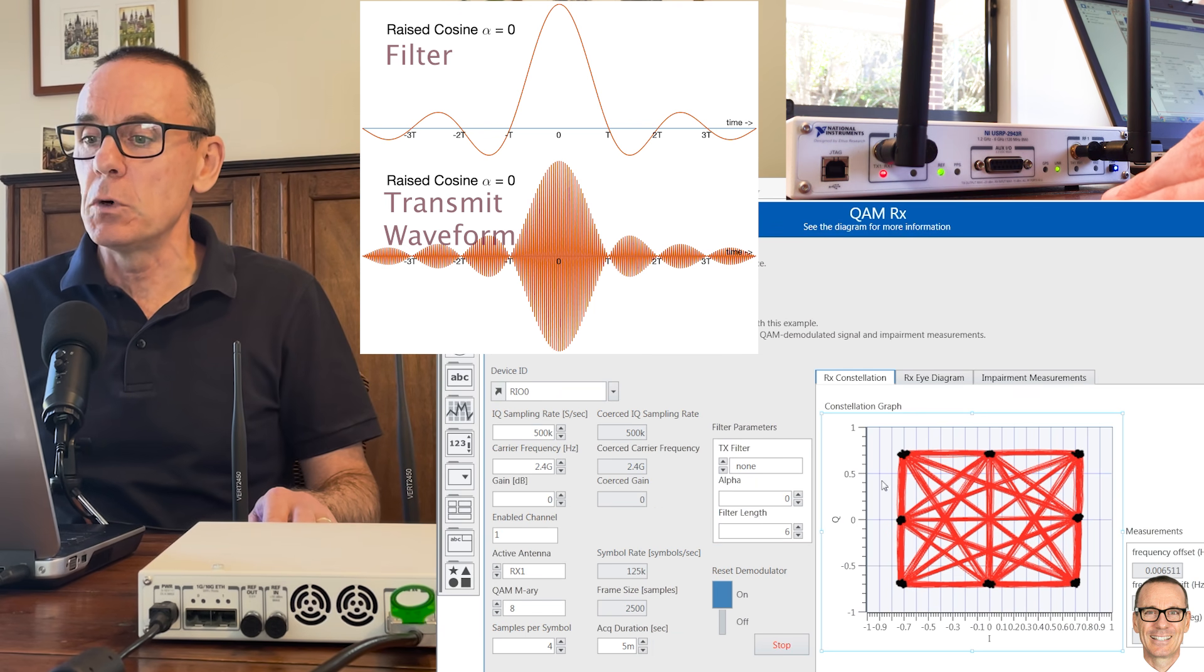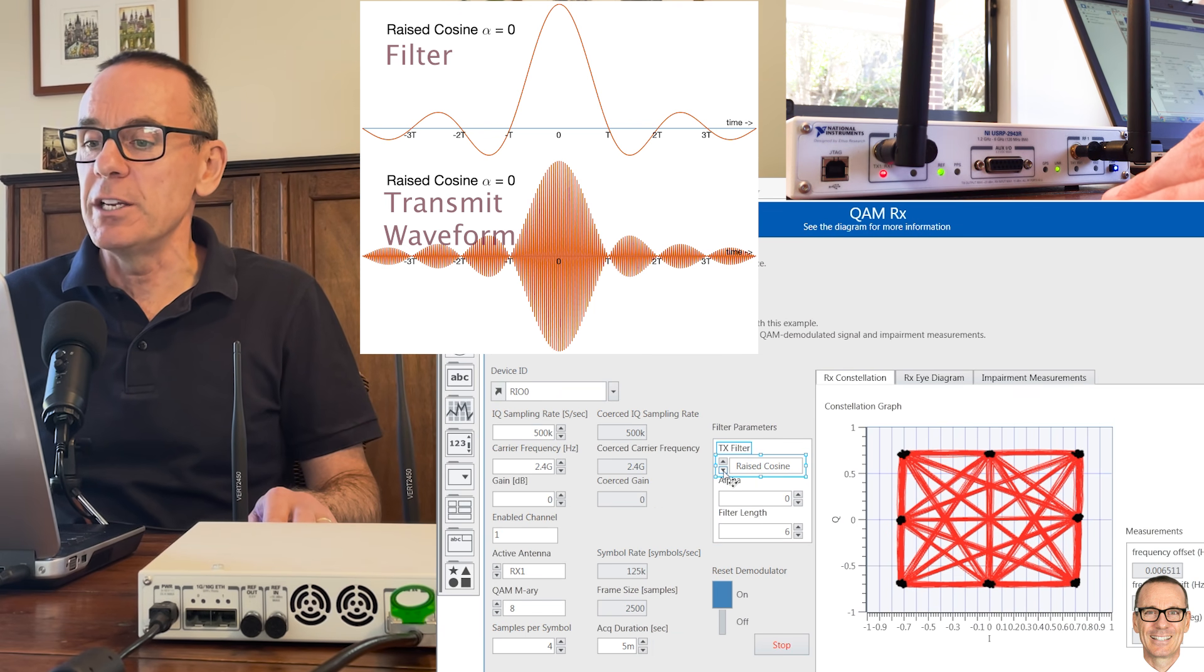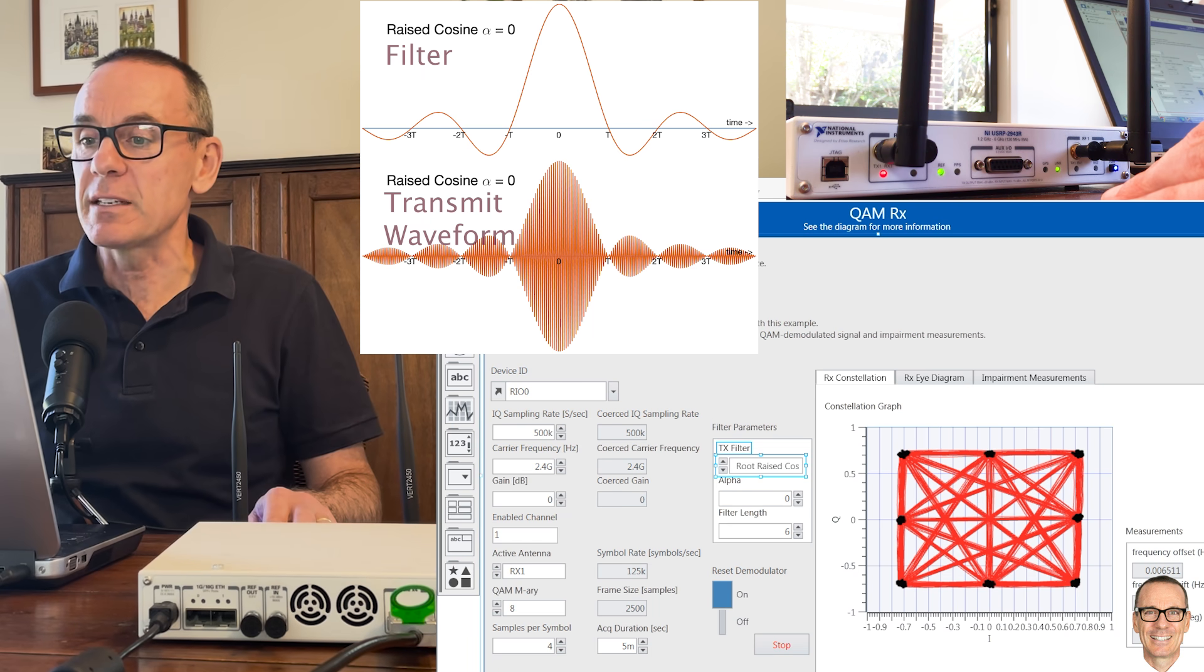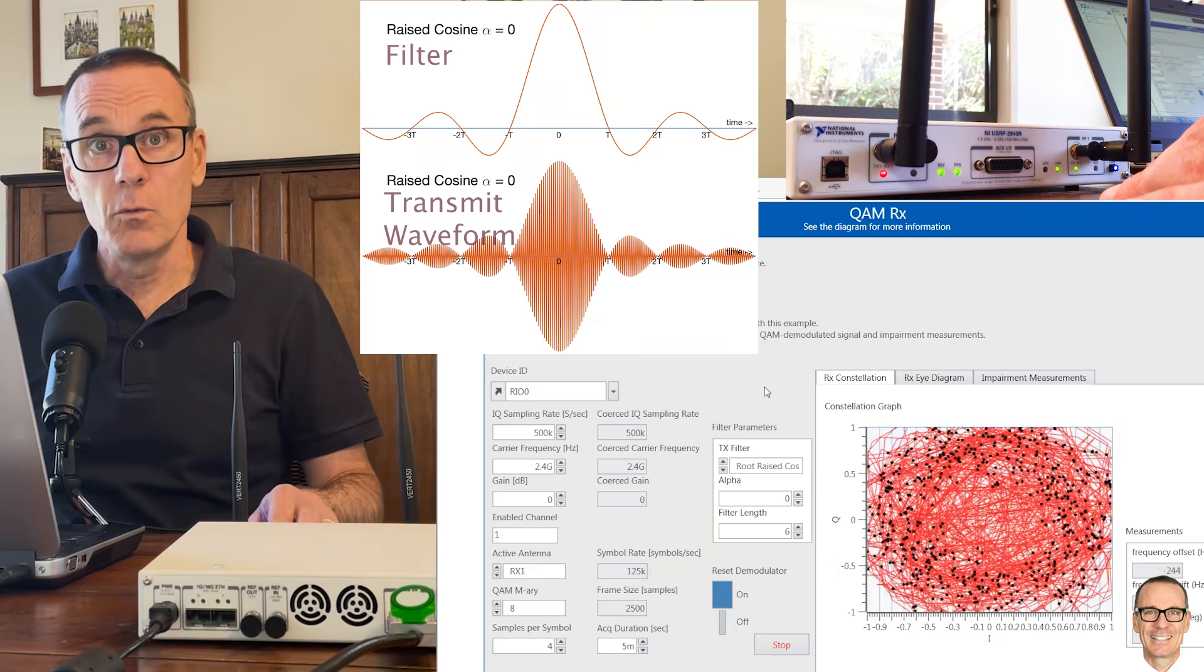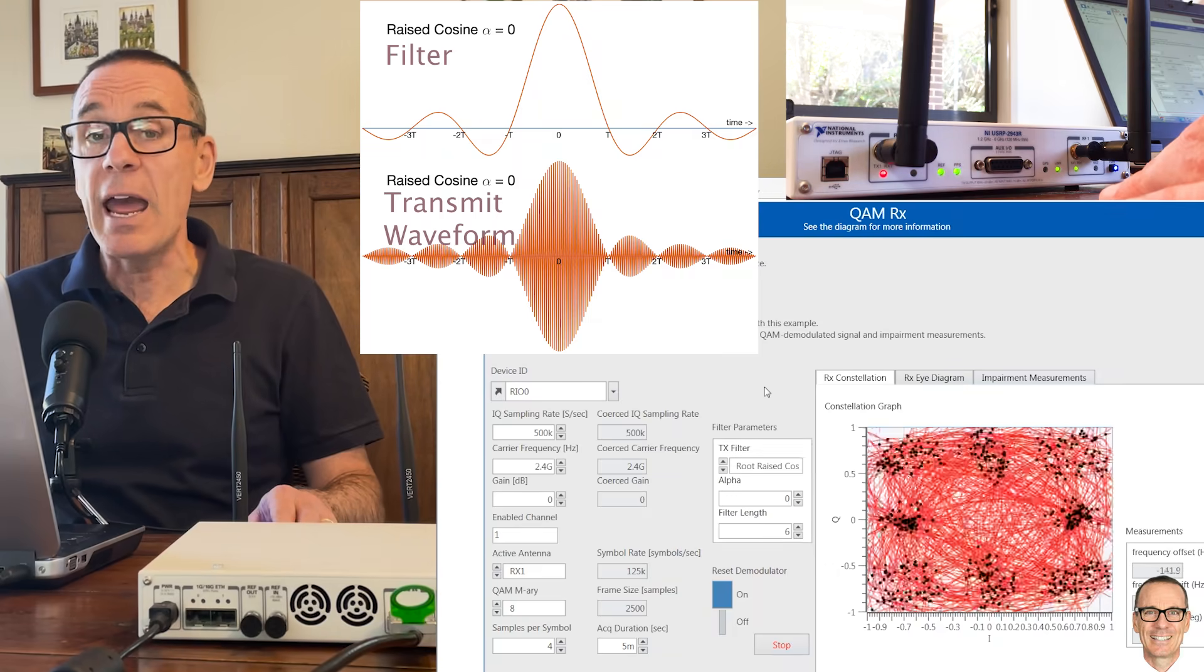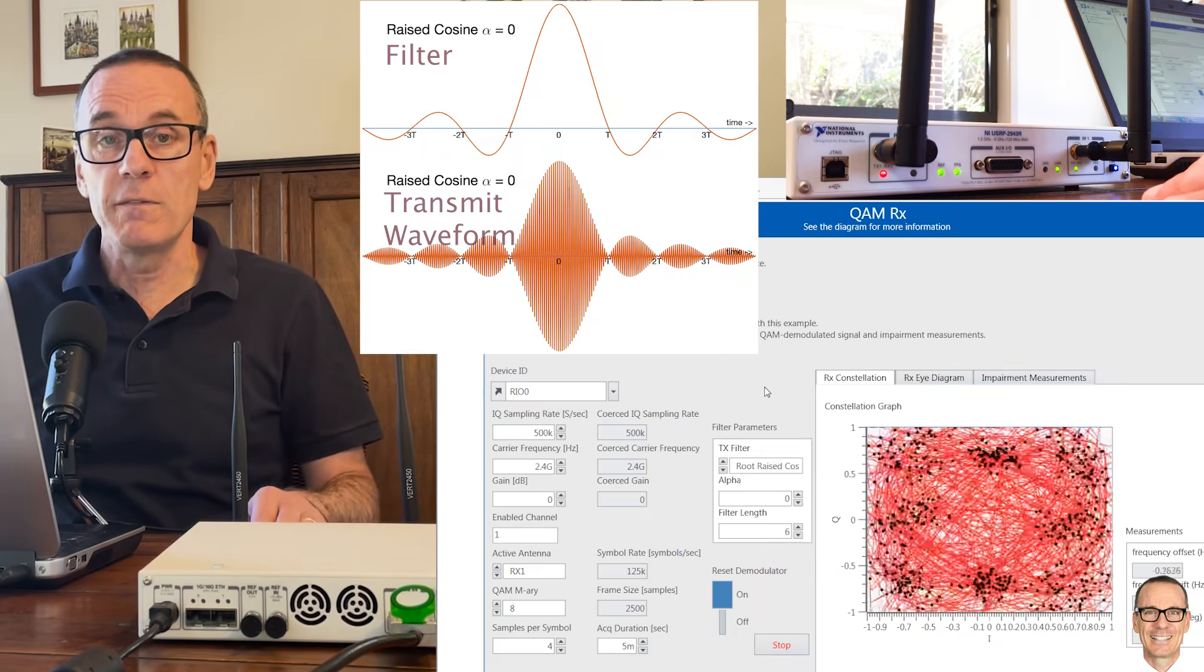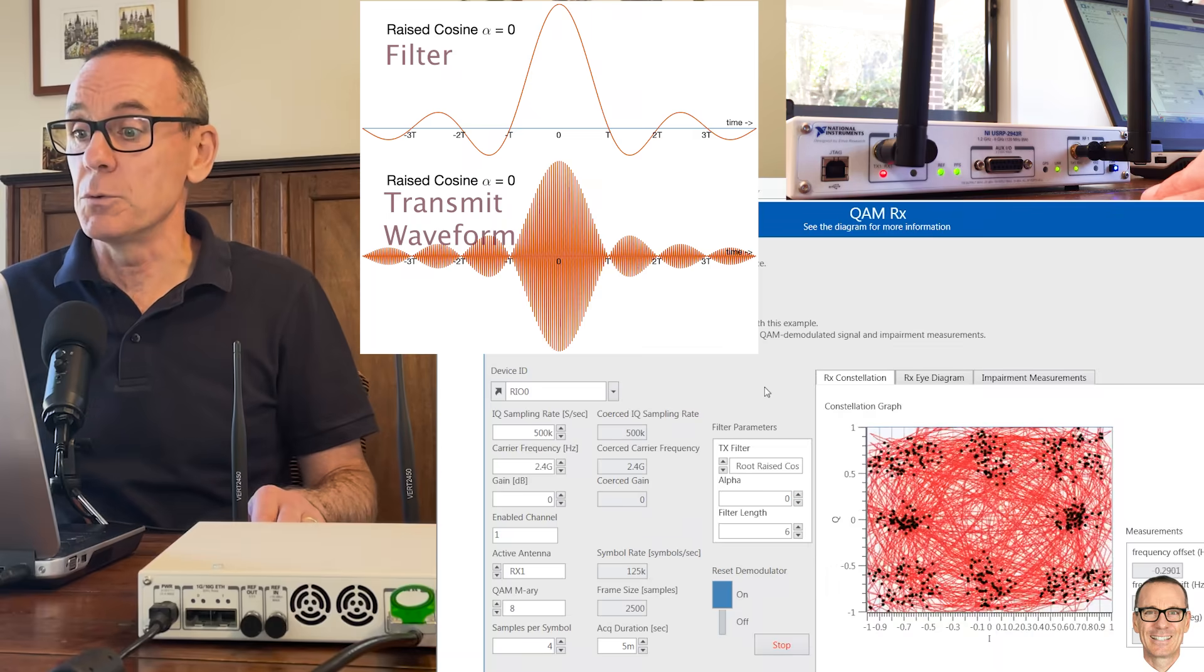This was the receive constellation before and now we're going to change the filter to a root raised cosine and we'll see the effect on the receive constellation diagram. Here's the receive constellation diagram now with a root raised cosine filter with an alpha equals zero.